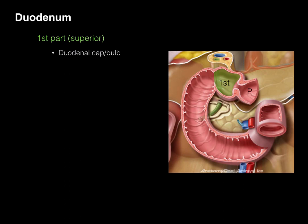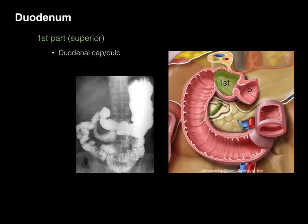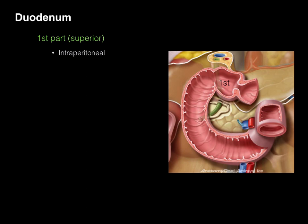Radiologists also call it the duodenal cap or duodenal bulb. In an upper barium GI study — an x-ray where the patient swallows barium, a contrast agent dense enough to block x-rays — everything in white is barium within the lumen of the GI tract. You can see that first part of the duodenum makes a cap shape. It's also smooth-walled, in contrast to the rugae seen in the rest of the duodenum, and it's intraperitoneal, while the second, third, and fourth parts are retroperitoneal.